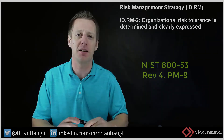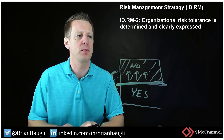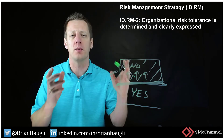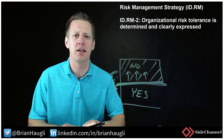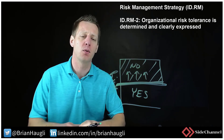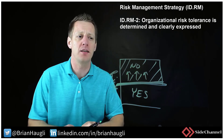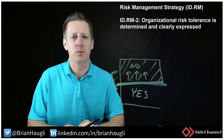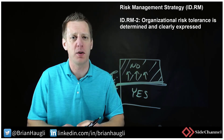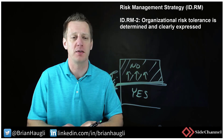ID.RM-2 — Organizational Risk Tolerance is determined and clearly expressed — whether through your enterprise risk management group, a higher-level board, or an audit committee. Ask yourself: Is it determined? Is it clearly expressed? Is it followed? Take a look at NIST CSF — not the easiest control to get through, but definitely one you need to be doing alongside the rest of the controls. Thanks.